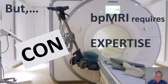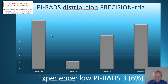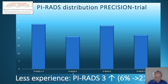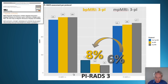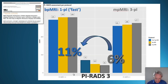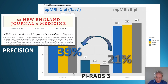Let's zoom in on expertise. Looking at the PRECISION trial data, expert central reads show a PI-RADS 3 — the indeterminate diagnosis — rate of just six percent. This increases to 21 percent with an average radiologist. Going back to the 600-patient head-to-head comparison: with multi-parametric MRI, PI-RADS 3 is six percent; the three-plane bi-parametric technique is eight percent; and fast MRI is 11 percent. If we extrapolate from six to 11 percent using the 21 percent rate seen with inexperienced readers, you arrive at an unacceptable PI-RADS 3 diagnosis rate of almost 40 percent.